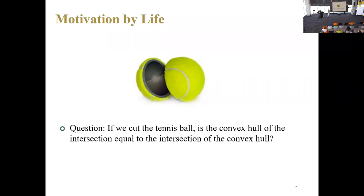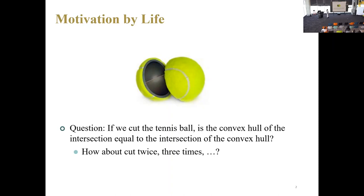The first slide: motivation by life. This is Dr. Shih's life because I don't play tennis. In this example, we are given a tennis ball. It's non-convex, it's not solid, it has no filling. If we cut it in halves, the convex hull of the intersection equals the intersection of the convex hull. That is, we cut the non-convex tennis ball into halves and make it solid. Another option is we first make the tennis ball solid, add the fillings, and then cut it in half. Each option leads to the same half-solid ball. This is the question we try to answer in this talk. And how about we cut the tennis ball twice, three times, more than three times? Does the conclusion still hold? It may not — we'll answer this using our results.